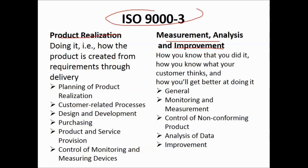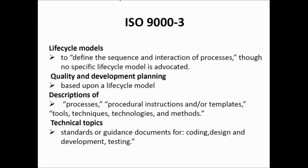Resource management covers how the product is created — from requirements through delivery — including planning of product realization, customer-related processes, design and development, purchasing, product and service provision, and control of monitoring and measuring devices. Then comes measurement, analysis, and improvement: how you know what you did, what your customer thinks, and how you will improve through monitoring, measurement, controlling non-conforming product, data analysis, and improvement.